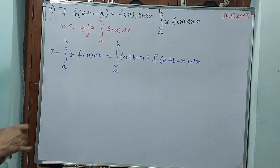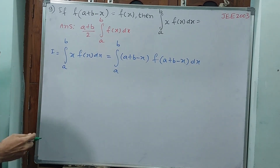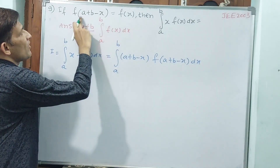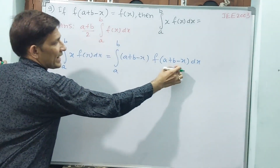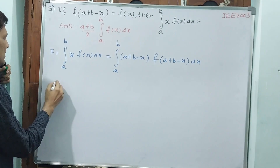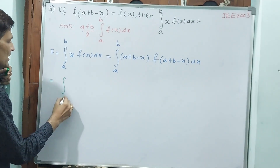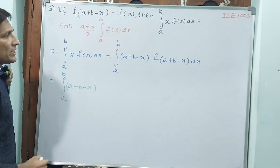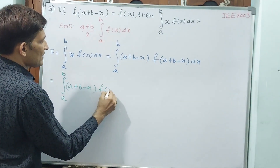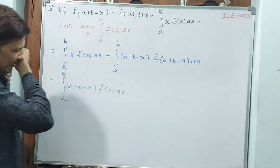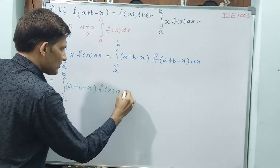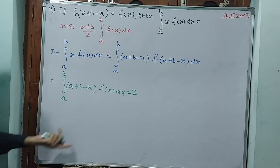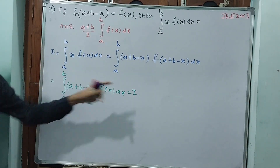Now, this you cannot do anything with. But if you see here, f of (a plus b minus x) is equal to f of x, so again this you can write as f of x. That is equal to integral from a to b of (a plus b minus x) — keep like this only — this you can write as f of x dx. This is still I, because I have not changed anything — i to i.